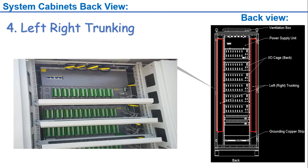The trunking in the system cabinet is used when cable laying after termination on the back side of the terminal boards from all the racks. At the end of the cabinet there is a grounding strip for grounding cables.